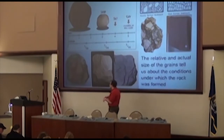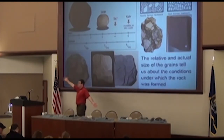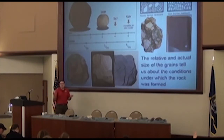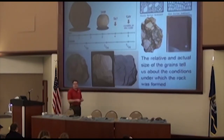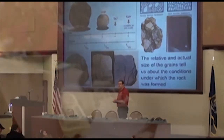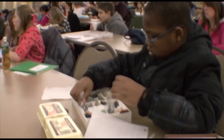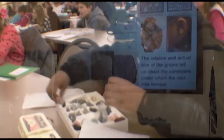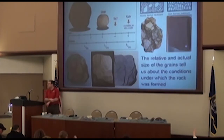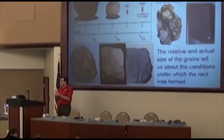Which sedimentary rock in your kit looks like it has the largest grain size? Conglomerate — it should have pretty big grains, maybe the size of your fingernail. Which one looks like it has the smallest grains? Sandstone is a good guess because the grains look much smaller than in the conglomerate, but there's another one that has even smaller grains — you can't see them with your naked eye.